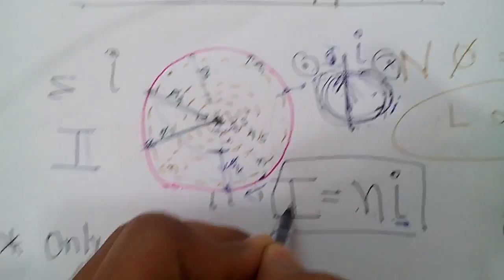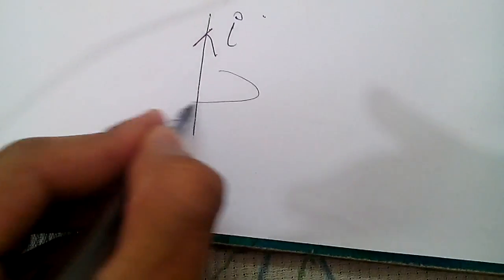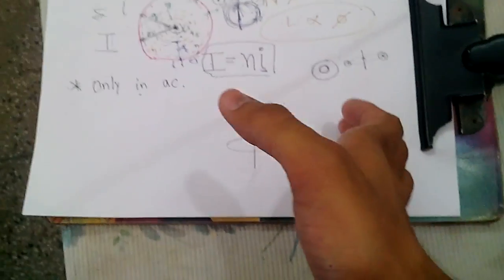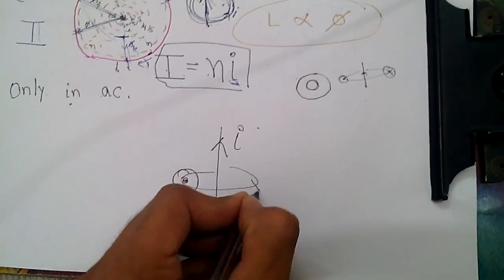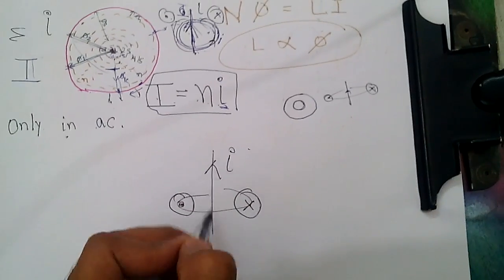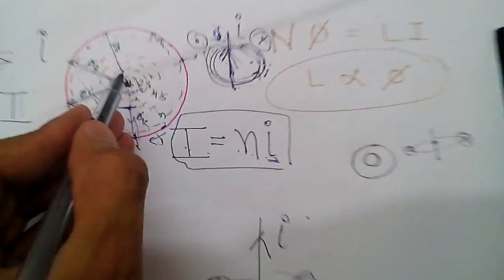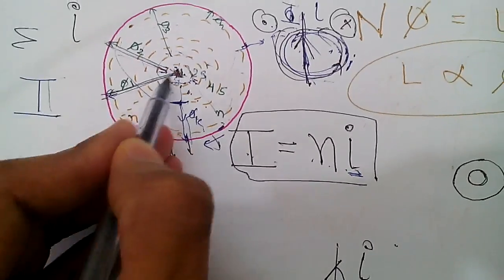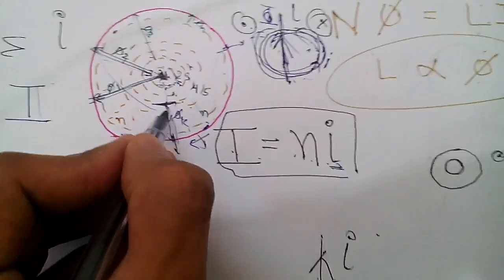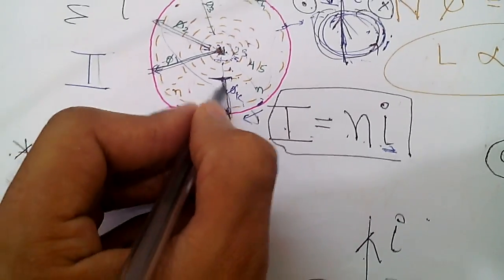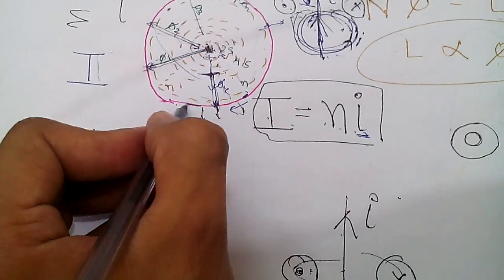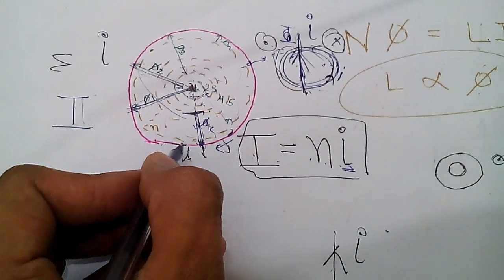We know that a current-carrying conductor produces a magnetic field around it. Using the right-hand corkscrew rule, if current flows in a given direction, the magnetic field lines are outward on one side and inward on the other. For an inner annular ring, the field lines are confined throughout the conductor inside that ring. For the outermost ring, the field lines are only outward and not confined inside.